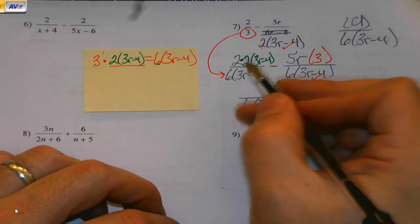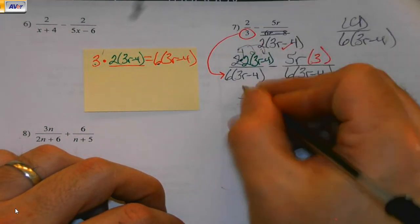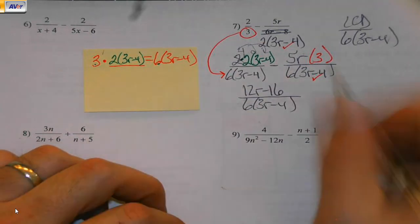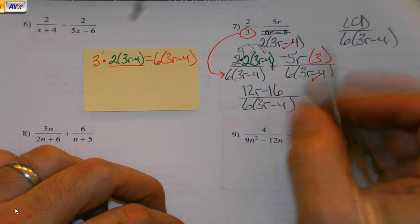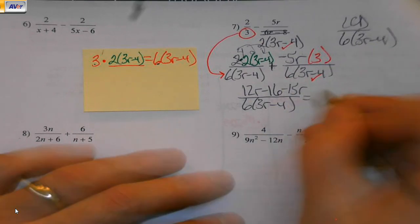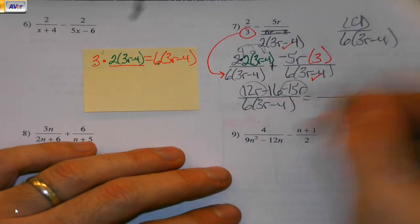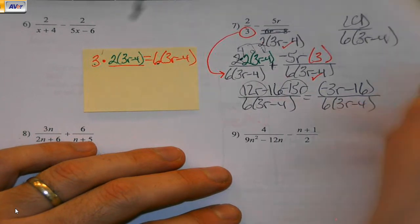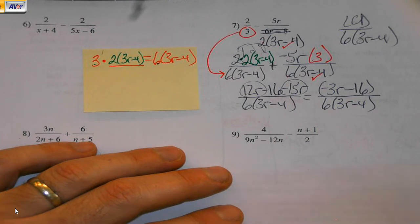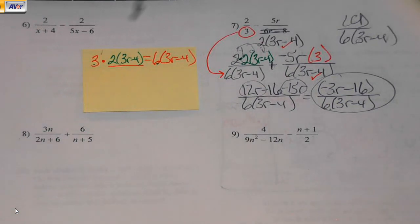How do I clean this up? Two times two is four. Distribute my four. And here, remember, this negative goes with my 5r. Negative five times three is negative 15r. I combine my like terms. Negative 3r minus 16 over 6, 3r minus 4. Here's why it's so critical to keep parentheses in when you see pluses or minuses. No, you can't cancel. They're bonded. That's as far as you are going to go.